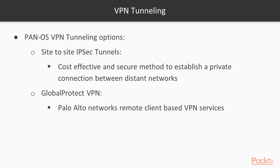Every major or well-known network firewall vendor will have their flavor of remote access VPN. You have an appliance, you have remote users, or your company is allowing telecommute, which requires users working from home or working from anywhere in the world to connect to your on-prem environment — whether that's on-prem servers or applications running in your data center that are not open to the outside world and require secure end-to-end communication over the internet. The way we do it in Palo Alto is with Global Protect.